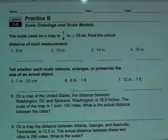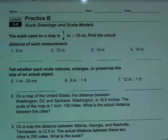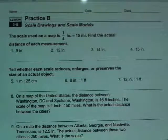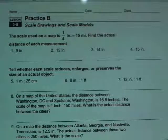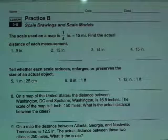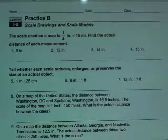This is the homework helper for Chapter 5, Section 8 in the eighth grade textbook entitled Scale Drawings and Scale Models. Let's go ahead and take a look at 1 through 4. In 1 through 4, the directions are the same. It says that the scale used on a map is a quarter inch is the same as 15 miles. Find the actual distance of each measurement.